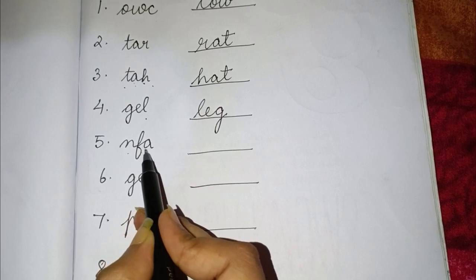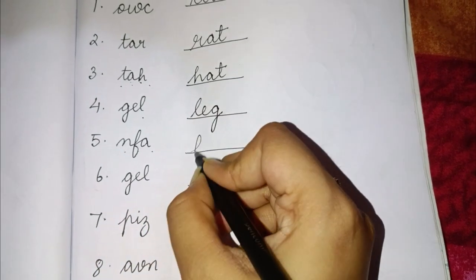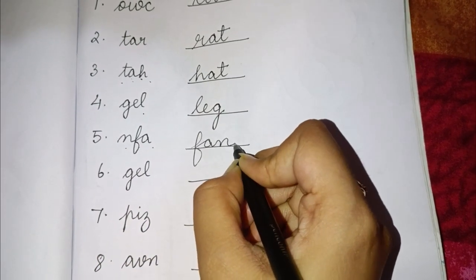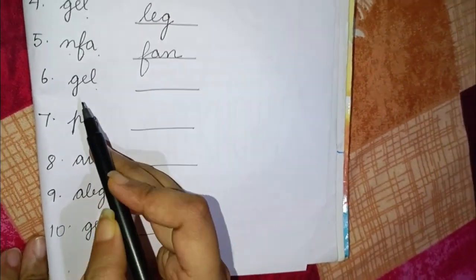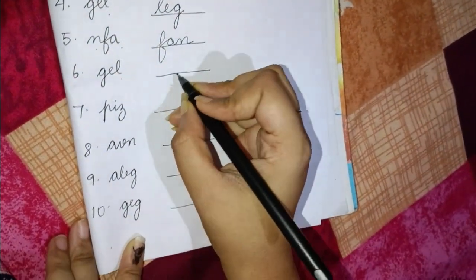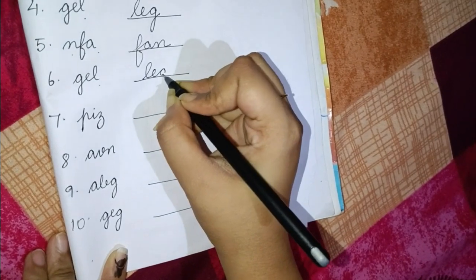Next is N F A. The correct word will be F A N fan. Now the next word you can see here is G E L gel. But this is a wrong word. The correct word will be L E G leg.